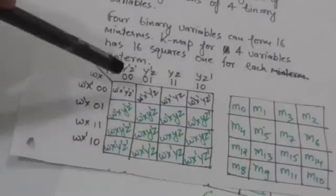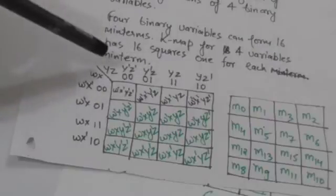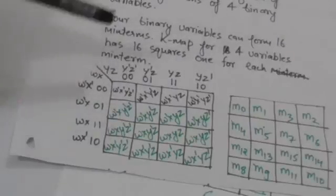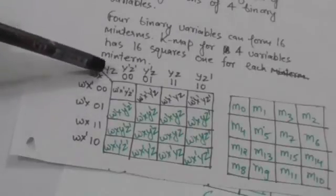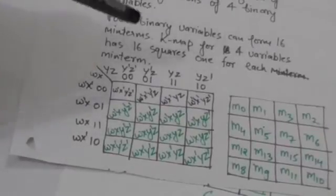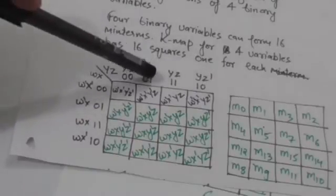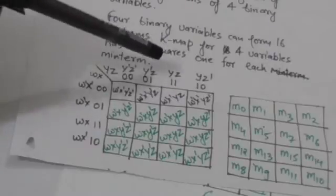These numbers represent the value of binary variables — each bit corresponds to each binary variable. This bit corresponds to binary variable Y, this bit corresponds to binary variable Z, and this bit corresponds to binary variable X. If the bit is 0, then the variable is in its complement form; if the bit is 1, then the variable is in its normal form. For example, 01 represents Y-not Z.